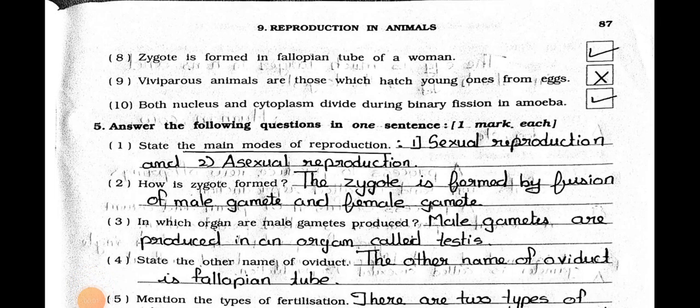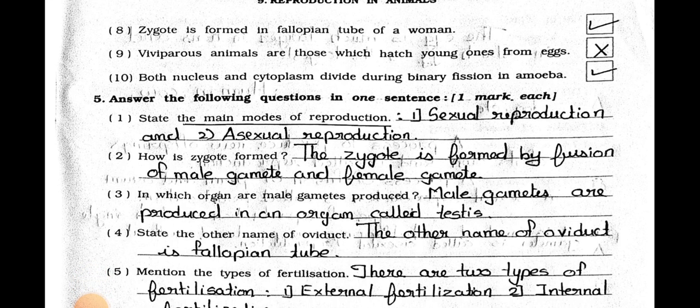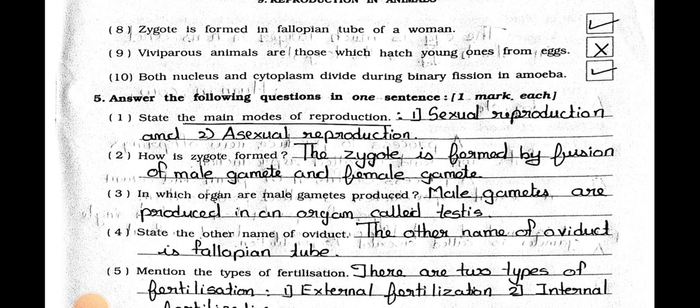Hello students, how are you all? I hope you all are fine. Today we will see standard 8th, subject science, chapter number 9. Chapter name is Reproduction in Animals. In the previous video part 1 we have seen up to main 4. Today we will see main 5.